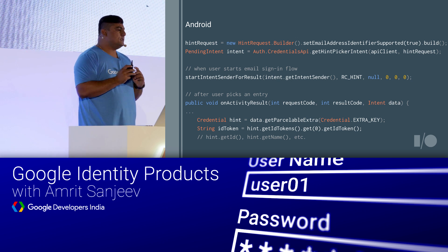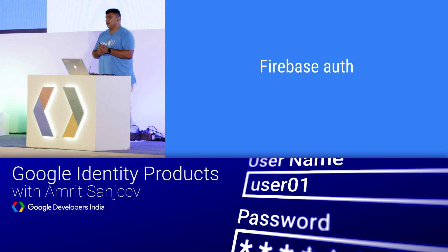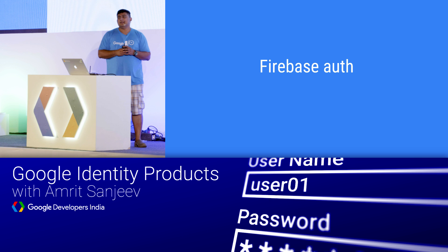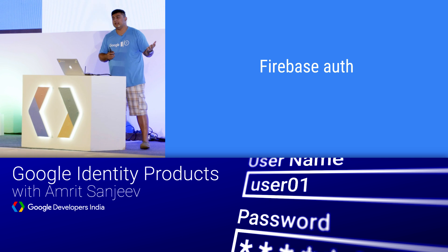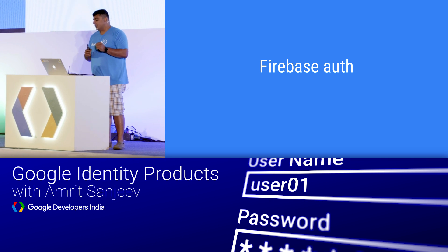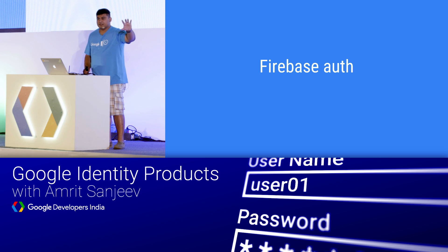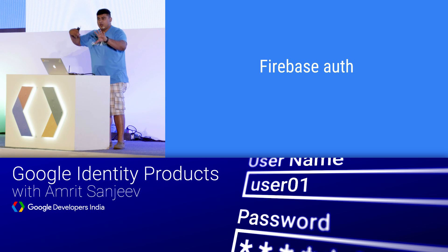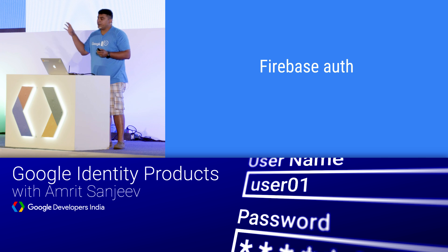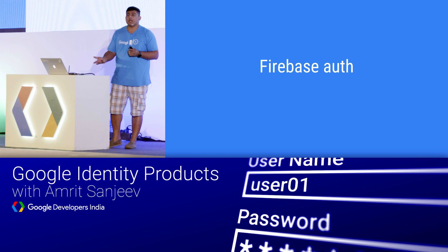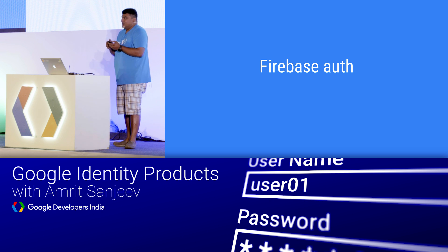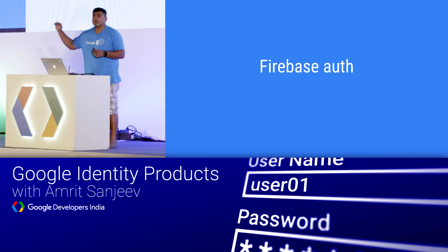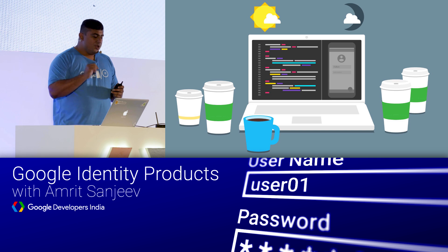So now we have covered three components. First: how do you sign in — Google Sign-In allows you to do that. Second: Smart Lock, which saves credentials so the re-login becomes a frictionless process. Third: the Hint API augments the experience by reducing the amount of typing — the user just clicks through and selects the ID they want to work with.